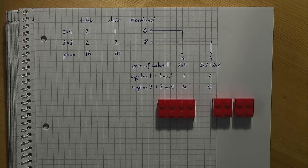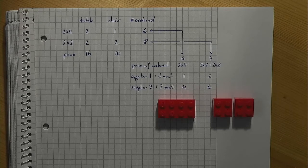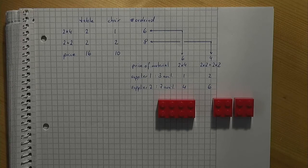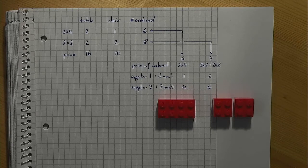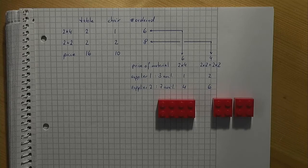we have decision variables z11 for the number of 2x4s bought from supplier 1, z12 for the number of pairs of 2x2s bought from supplier 1, z21 and z22 are defined likewise for the second supplier. This allows us to formulate the following.